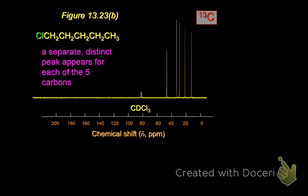That CDCL3 is just an internal control. You can ignore that one. However, if you look here, this is what? One chloropentane? One, two, three, four, five. Yeah, one chloropentane. And you get an individual peak for each of the five carbons.